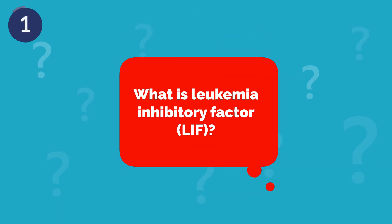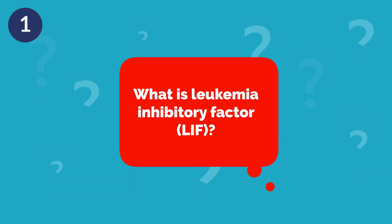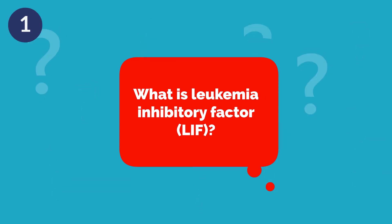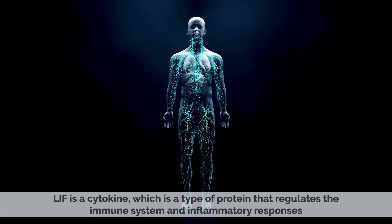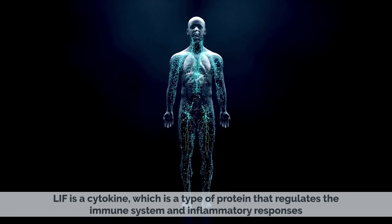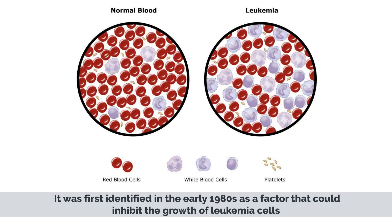What is Leukemia Inhibitory Factor, LIF? LIF is a cytokine, which is a type of protein that regulates the immune system and inflammatory responses. It was first identified in the early 1980s as a factor that could inhibit the growth of leukemia cells.